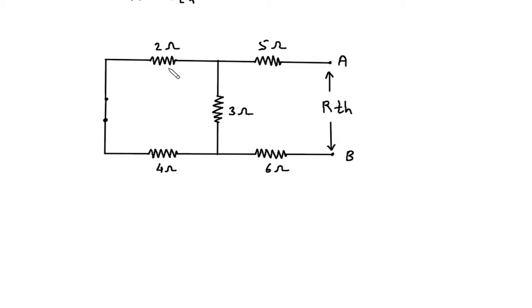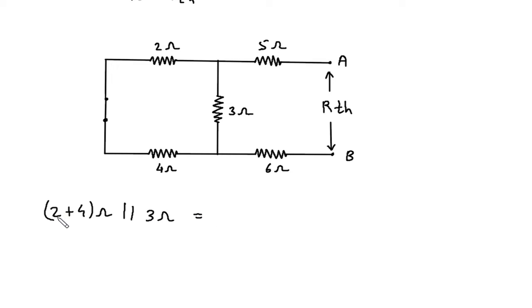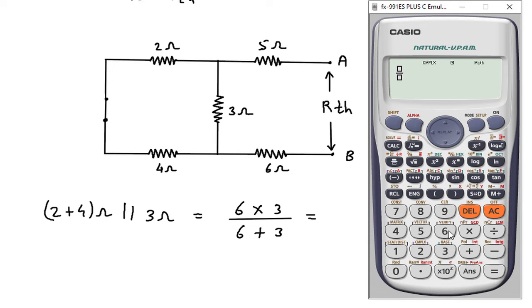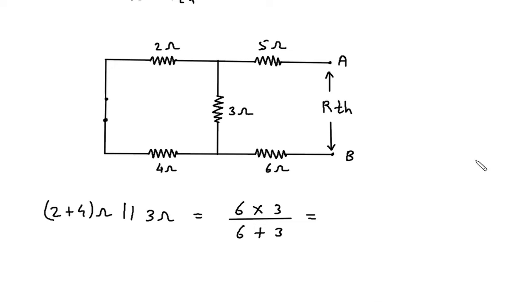Now here we can see that this 2 ohm and 4 ohm are connected in series, so 2 plus 4 ohm. Now this 6 ohm is connected in parallel to this 3 ohm. So this will be 6 into 3 divided by 6 plus 3, which gives 2 ohm.